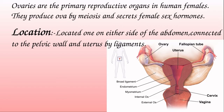The ovaries also secrete sex hormones. Just as the testes produce androgens, the male sex hormones, the ovaries produce the female sex hormones. So the functions of the ovaries are to produce ova and to produce female sex hormones.